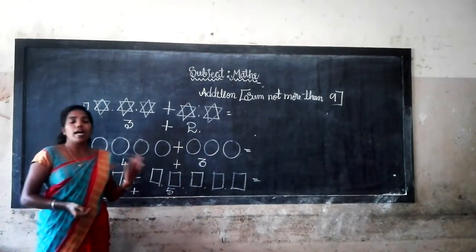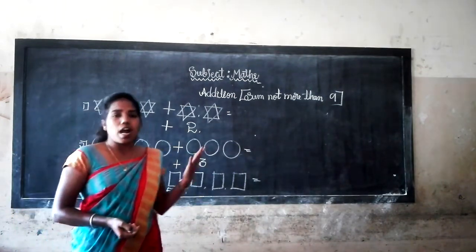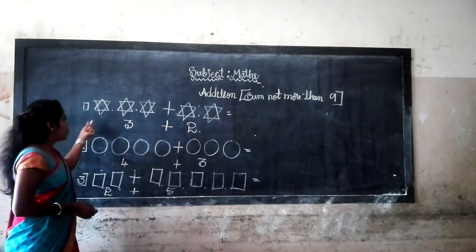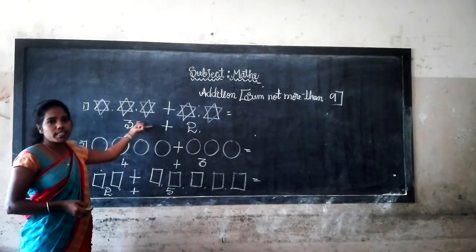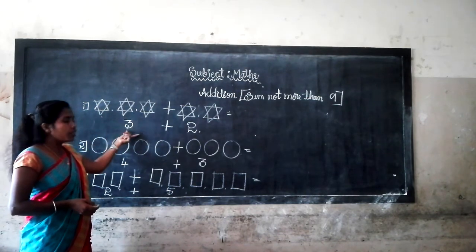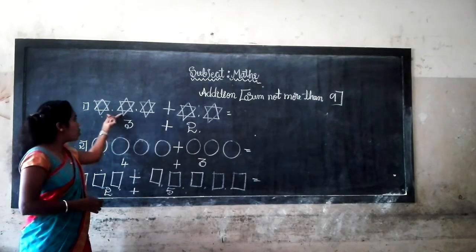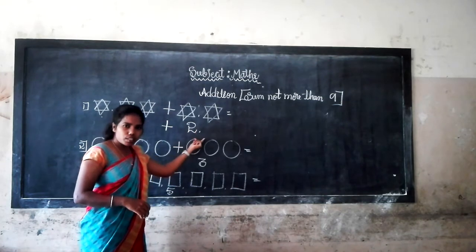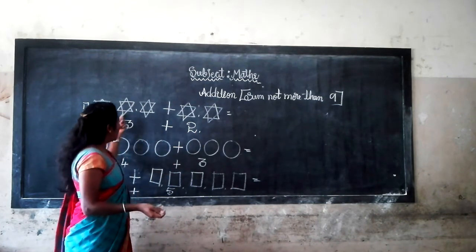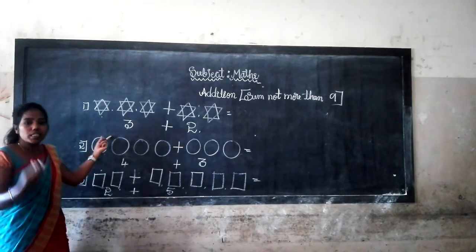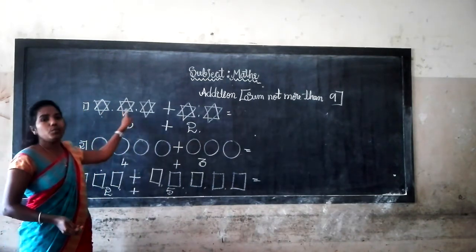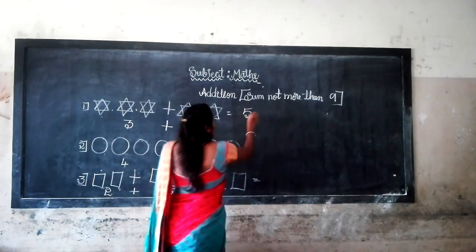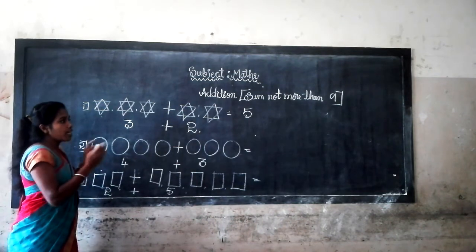Dear students, now you add the numbers and the pictures, you will get the same answer. So the first one is stars. How many stars are there? I wrote the numbers below the stars: one, two, three. Here three. One, two — how many circles are there? Two stars. So one, two, three. And now you add three stars plus two stars: one, two, three, four, five. How many stars? Totally five stars.